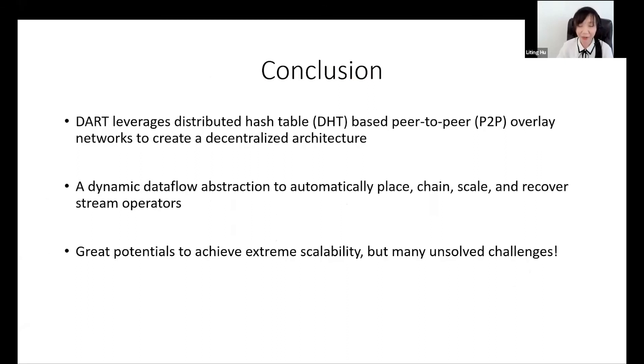To conclude, to our knowledge, DART is the first-of-its-kind fully decentralized edge stream processing engine. It leverages distributed hash table based peer-to-peer overlay networks to create a decentralized architecture. It builds a dynamic data flow abstraction to automatically place, chain, scale, and recover stream operators. Therefore, it has great potential to explore extreme scalability.